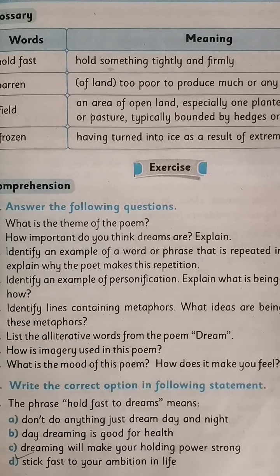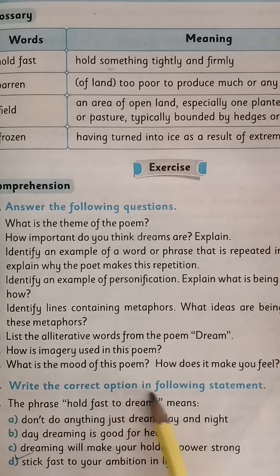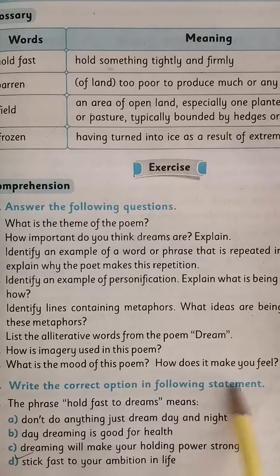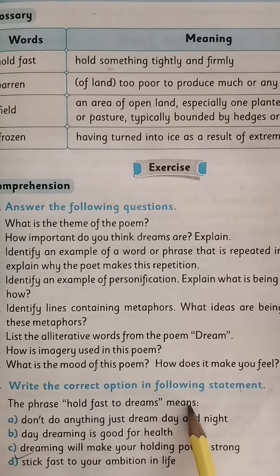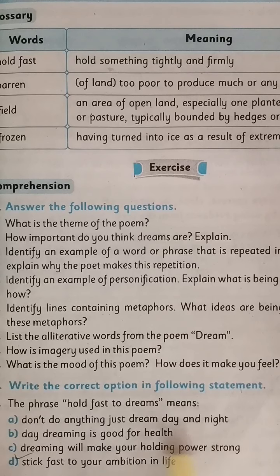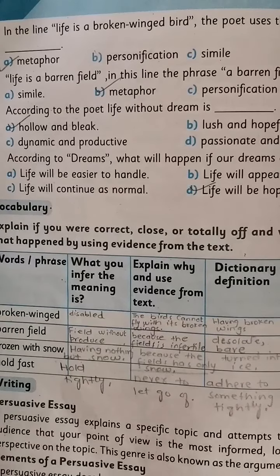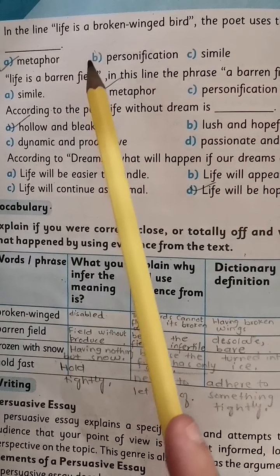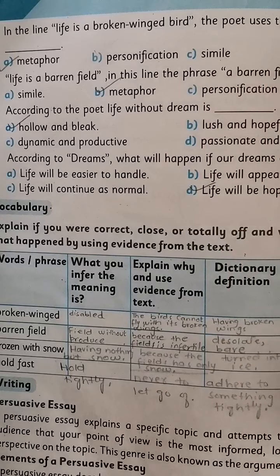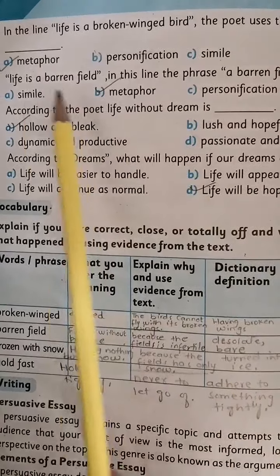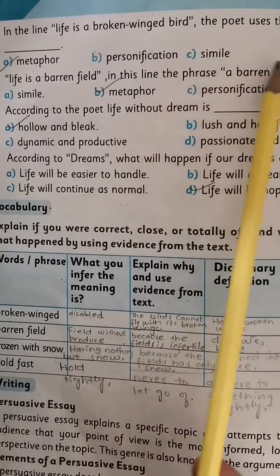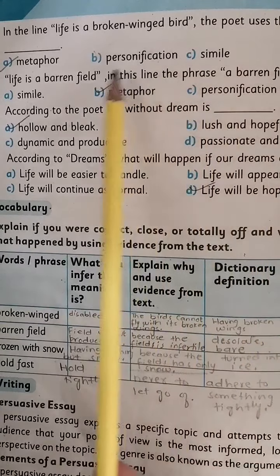Now the exercises. Question one: the phrase 'hold fast to dreams' means — the correct option is D: stick fast to your ambition in life. Question two: in the line 'life is a broken-winged bird,' the poet uses the technique of — the correct option is A: metaphor.